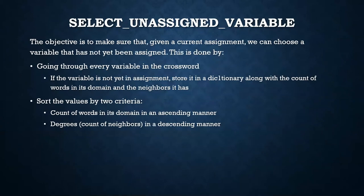The select unassigned variable will help us get an unassigned variable, as its name says, going through every variable in the crossword and checking if it is already or not in our assignment keys. We also keep track of its domain words and its neighbors to order by two criteria: the count of words in its domain in an ascending manner, and the degrees or count of neighbors in a descending manner.